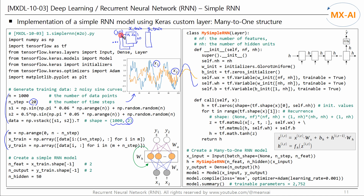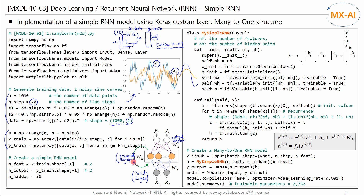X-Train has a 3D structure, and Y-Train has a 2D structure. This dataset is for time-series forecasting — please refer to the first video in this series for how to construct it. Now let's create an RNN model consisting of an input layer, a recurrent layer, and an output layer.